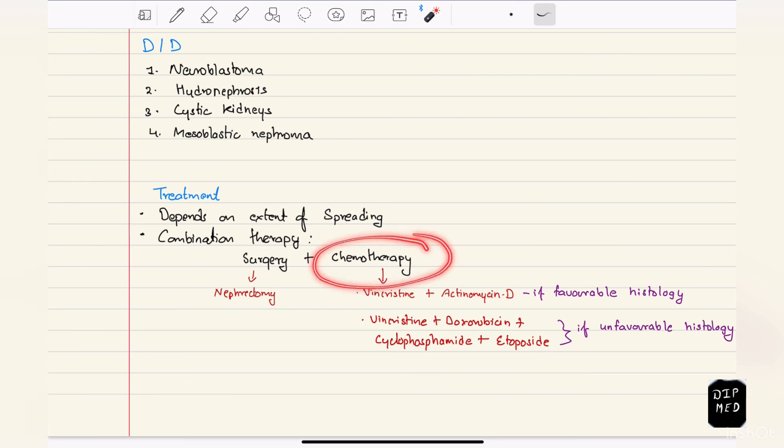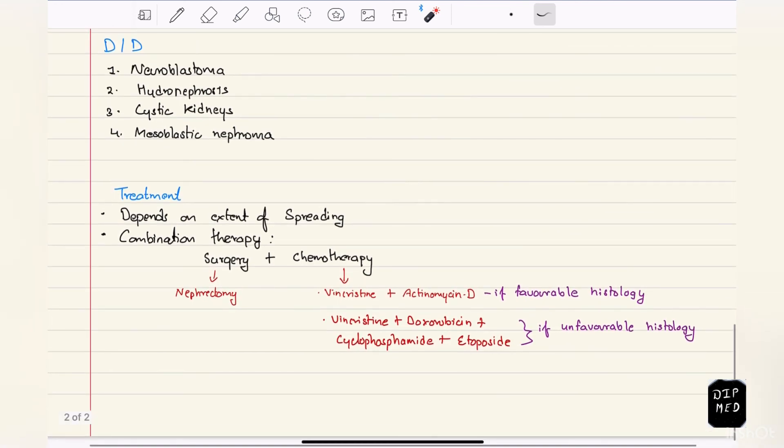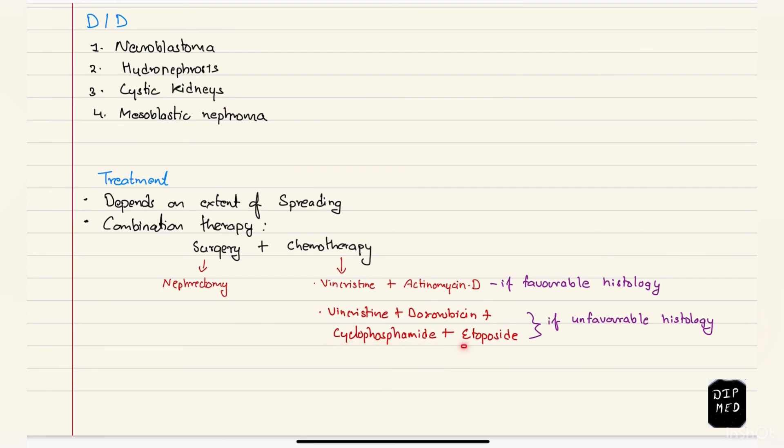On chemotherapy, if there is favorable histology, we give vincristine and actinomycin D or dactinomycin. But if the histology is unfavorable, that is there is anaplasia such as hyperchromatic polymorphic nucleus or number of mitotic figures are seen, then we give vincristine, doxorubicin, cyclophosphamide, and etoposide.